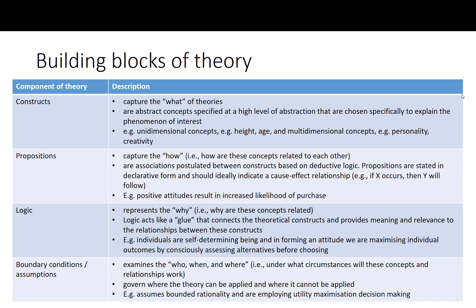The four components of theory are: the constructs, the propositions, the logic, and the boundary conditions or assumptions. Constructs are the 'what' — what are we talking about? Basic definitions. A construct could be singular — there could be just one thing in the theory, like speed or price. Usually, though, we're talking about things that are multi-dimensional when it comes to socially oriented theories in marketing, because individuals, decision making, and behaviour don't happen in a vacuum. For example, our height hardly ever dictates what brand we will buy.